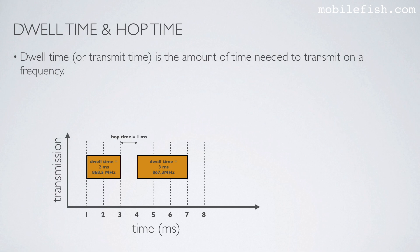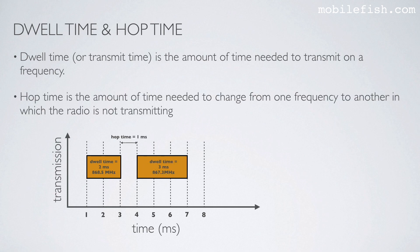Dwell time, or transmit time, is the amount of time needed to transmit on a frequency. In this example, the dwell time is 3 milliseconds. Hop time is the amount of time needed to change from one frequency to another, during which the radio is not transmitting. After a message is transmitted, it takes 1 millisecond to hop to another frequency.